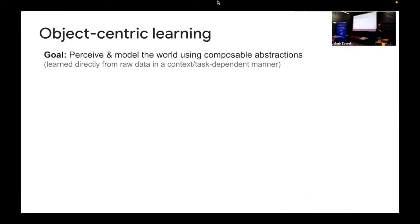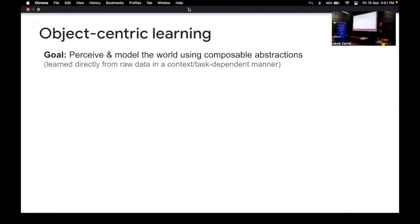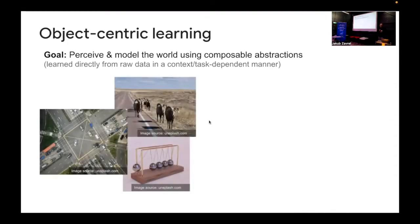This is from a subfield within the community called object-centric learning, and the goal is really to perceive and model the world around you using composable abstractions. By composable abstractions I mean abstractions are learned directly from raw data in some kind of context or task-dependent manner. So let's say you look at the world around you and you have things like a traffic scene or you see these animals marching on the street or you have this Newton's cradle setup here. Ultimately the way you perceive these scenes is really in terms of the things that pop out into existence as soon as you look at this, like the objects and the entities in there, and you can kind of mentally simulate what's going to happen next and especially how each individual entity or object is going to interact in this environment.